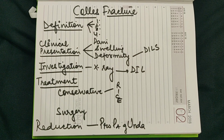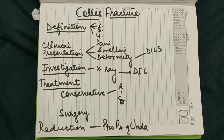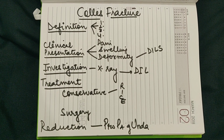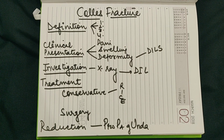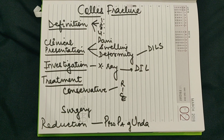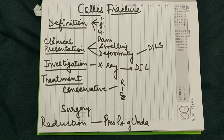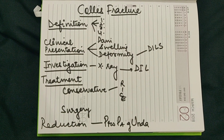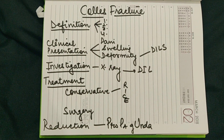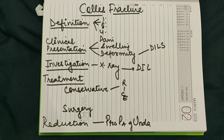In investigation, we do only a wrist X-ray, and for that, DIL is seen: dorsal displacement, dorsal tilt, impaction, lateral displacement, and lateral tilt. In treatment, we have both conservative and surgery. In conservative, the mnemonic RICE stands for rest and reduction, ice fermentation, compression, and elevation of the part. In both conservative and surgery, we do reduction with the mnemonic 'propaganda': PRO for pronation, PA for palmar traction, and U for ulnar deviation.